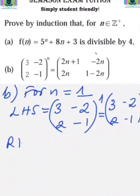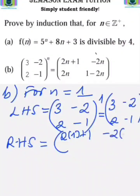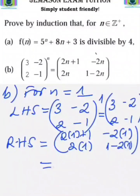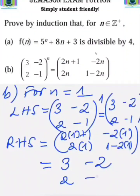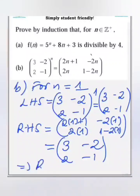The right hand side — substituting n equals 1 everywhere in the matrix — gives: 2 into 1 plus 1, negative 2 into 1, 2 into 1, and 1 minus 2 into 1. That evaluates to 3, negative 2, 2, and negative 1. We can see that the right hand side is equal to the left hand side, so the base case is true.